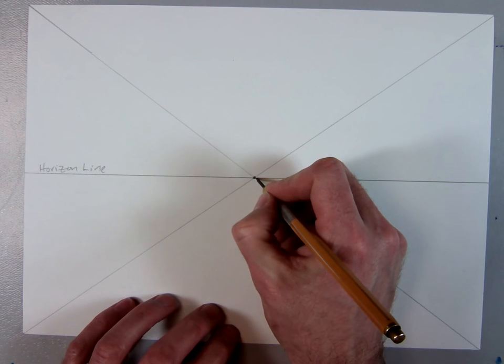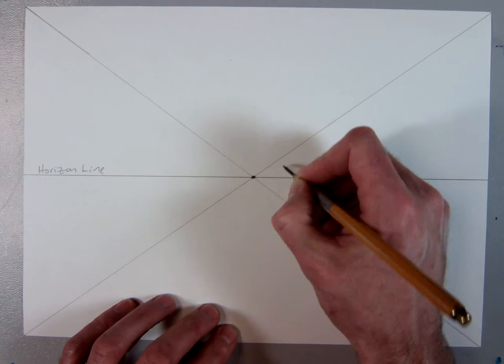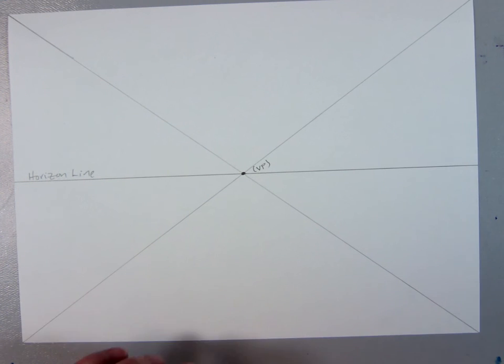Then, right here in the middle of your paper, where we already found that center, you're going to put your little dot and you can label it VP for vanishing point. Please label it so I know that you know what it is. Now we're going to start with our boxes.